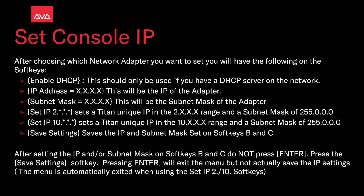After choosing a network adapter you want to set, you'll have the following on the soft keys. Enable DHCP — this should only be used if you have a DHCP server on the network. IP address equals xxxx — this will be the IP of the adapter. Subnet mask equals xxxx — this will be the subnet mask of the adapter.